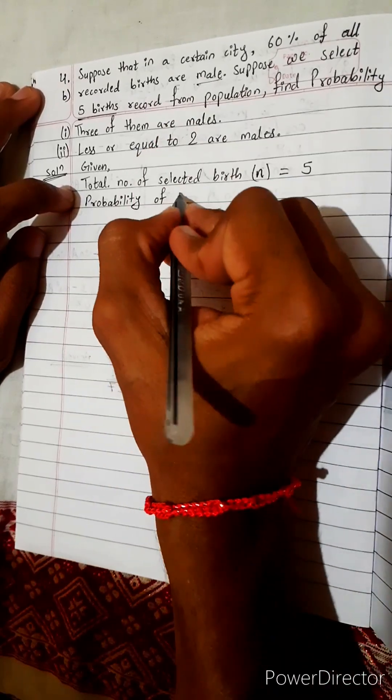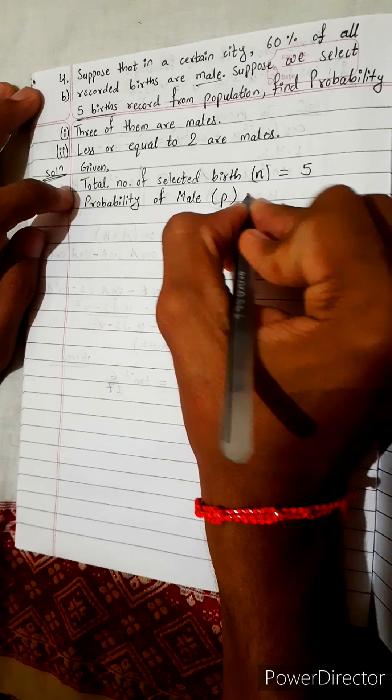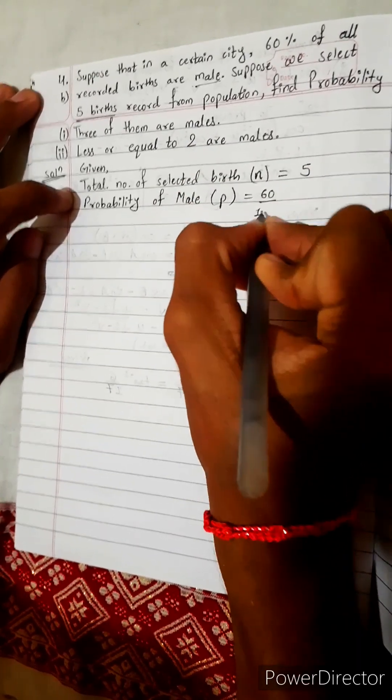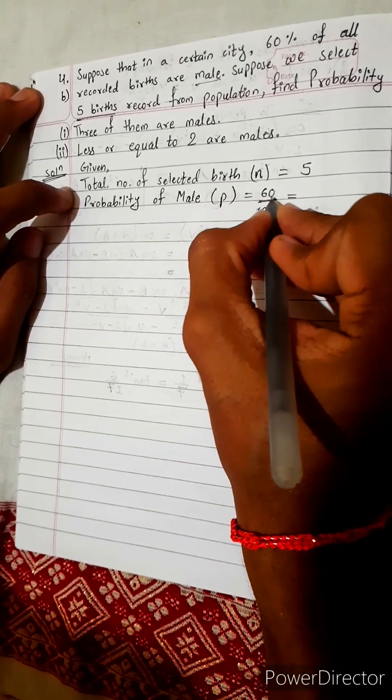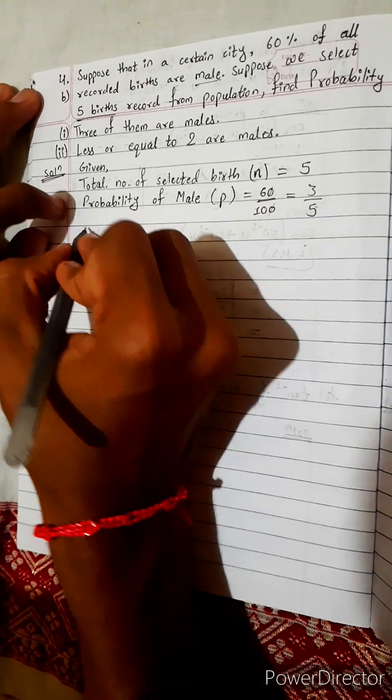Suppose let this as p. How much is it said? 60 percent. 60 percent means 60 per 100. What will be this? Two goes, three goes, six to five, three by five. Now probability of female...